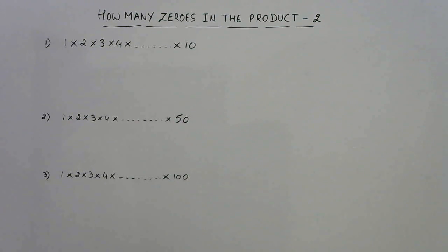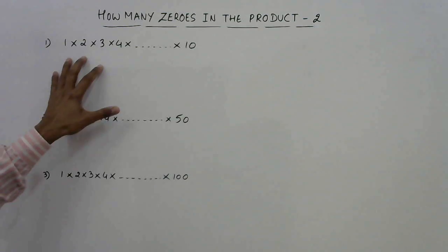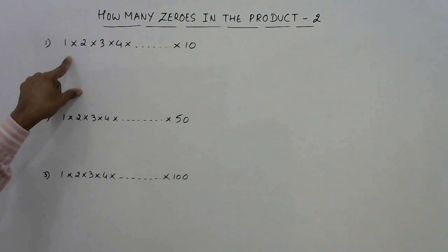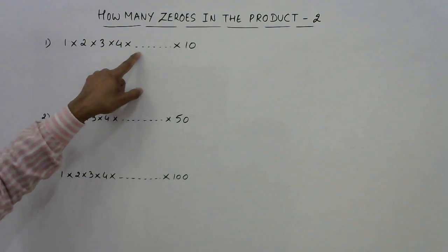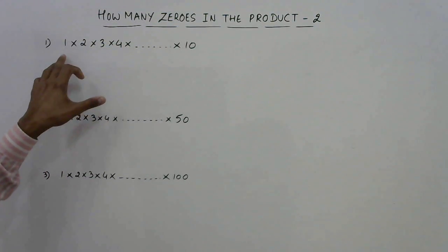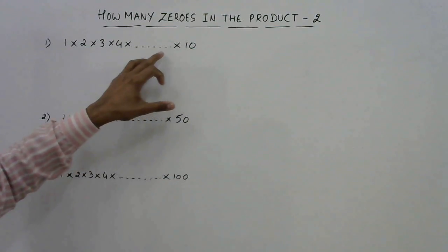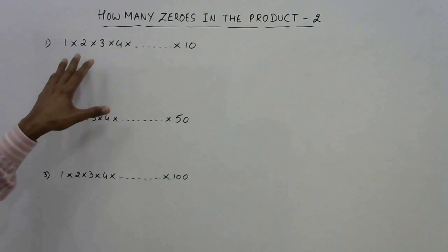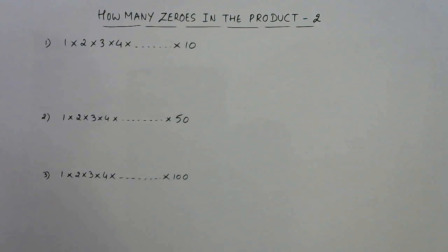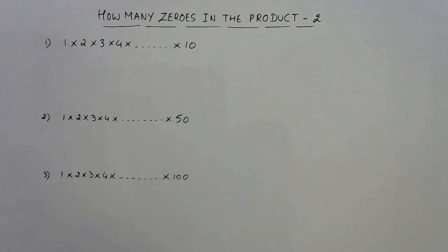Hello friends. I hope you have seen and learned how we can find the zeros in a given product. In the first part I told you some examples in which I took random numbers, but in this part I am going to take up numbers starting from 1, that is the natural numbers. So if you have a series like numbers starting from 1 and ending at 10, and all numbers are multiplied together, we cannot just find the product and count the zeros — that is going to consume a lot of time. So we need a method through which we can find the number of zeros easily.